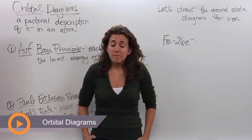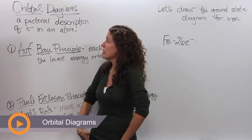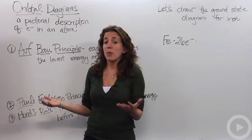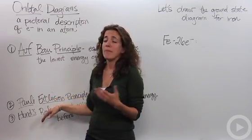All right, so let's talk about orbital diagrams. Orbital diagrams are a pictorial description of electrons in an atom. In order to figure out where electrons go in an atom, we have to follow three main rules.